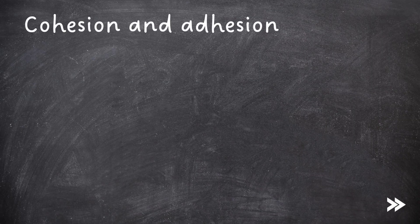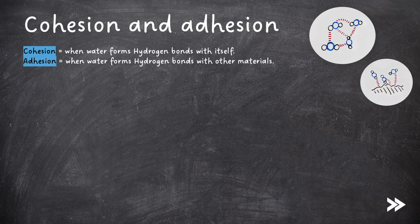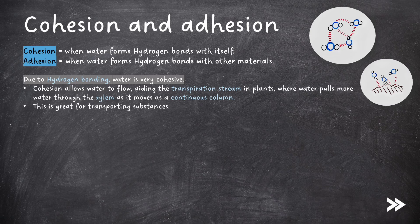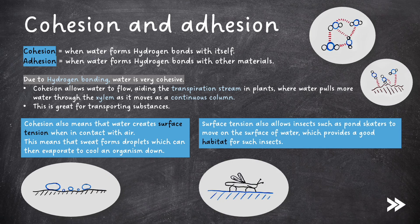We have cohesion and adhesion. Cohesion is when water forms hydrogen bonds with itself and adhesion is when water forms hydrogen bonds with other materials. Due to hydrogen bonding, water is very cohesive. Cohesion allows water to flow, aiding the transpiration stream in plants, where water pulls more water through the xylem as it moves as a continuous column — this is great for transporting substances. Cohesion also means that water creates surface tension when in contact with air. This means that sweat forms droplets, which can then evaporate to cool an organism down. Surface tension also allows insects such as pond skaters to move on the surface of water, which provides a good habitat for such insects.